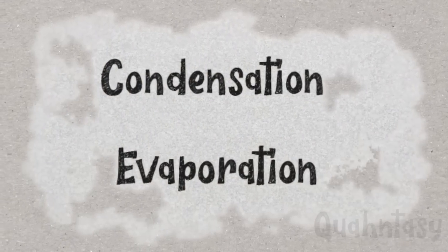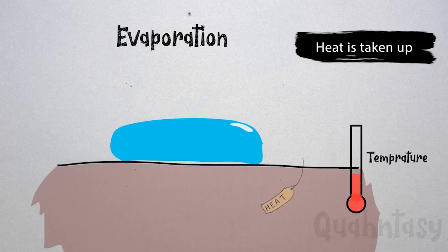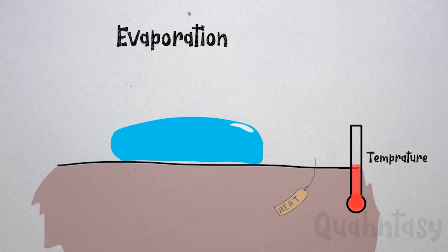In evaporation, heat is taken up for a phase change. What that means is when a liquid, in this case let's say water, turns into gaseous state, let's say water vapors, it takes away heat with it. Traditional water coolers are a perfect example for this.